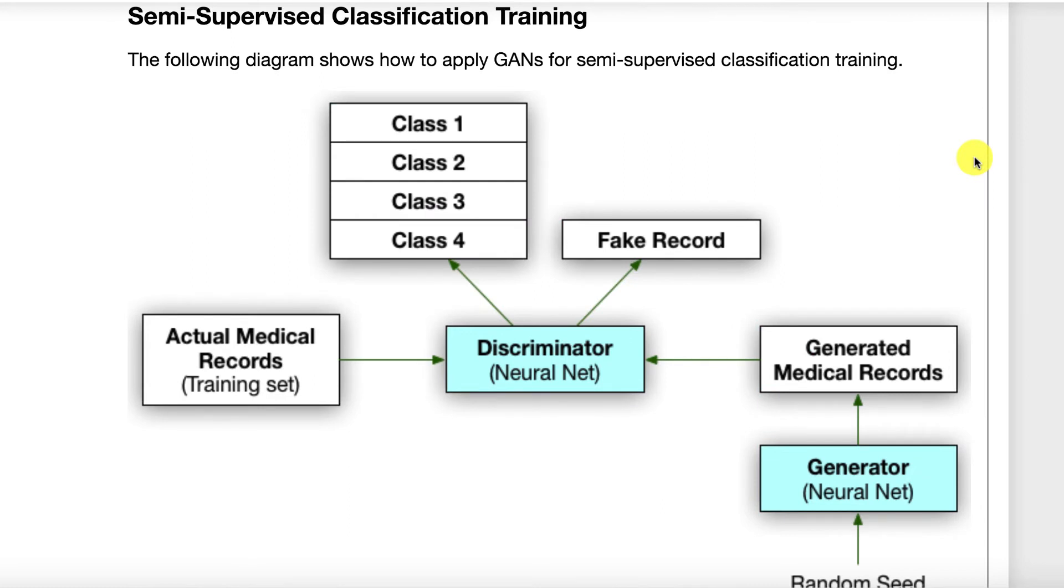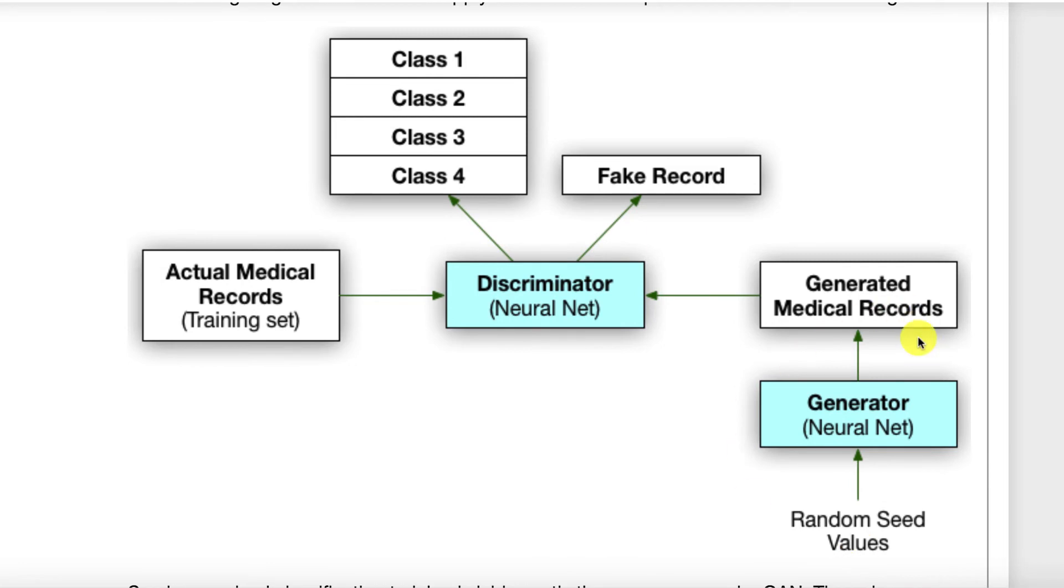This is how you would train a semi-supervised classification neural network. It's very, very similar to the diagram that we just looked at. In this case, we're looking at how we would train it on tabular data, say medical records. The discriminator would learn to tell the difference between a fake medical record, or whatever the generator is generating. This part's all the same as the previous one, as is this part.